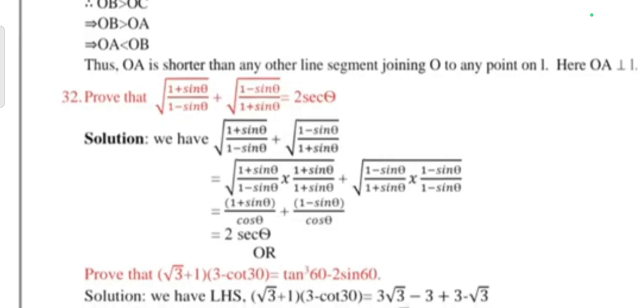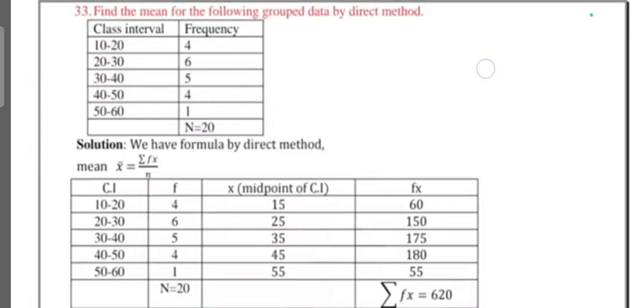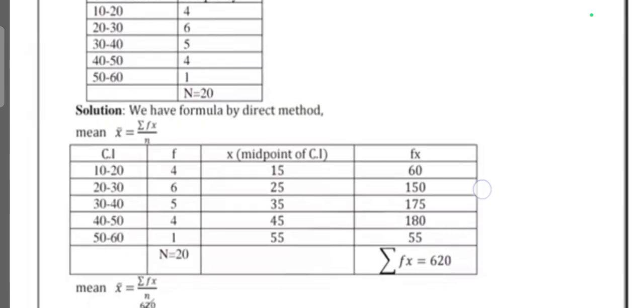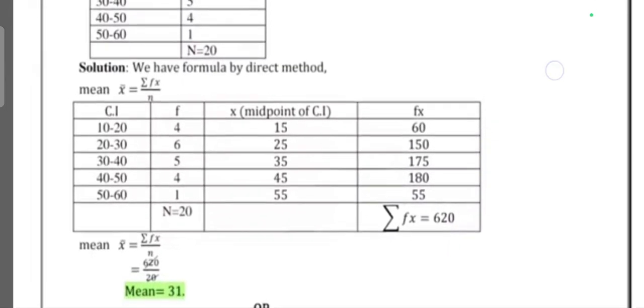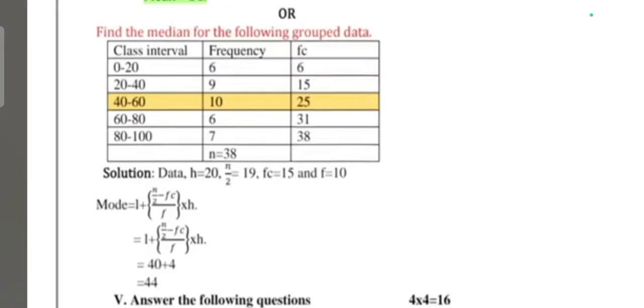Question 32: Prove that √[(1 + sinθ) / (1 - sinθ)] + √[(1 - sinθ) / (1 + sinθ)] = 2secθ. Question 33: Find the mean of the following grouped data by direct method. Find the median of the following grouped data.